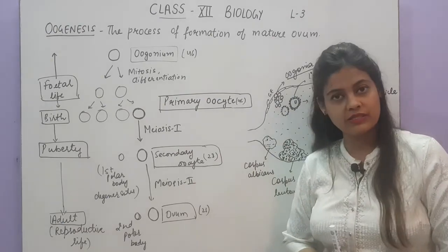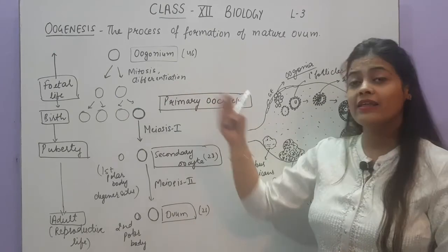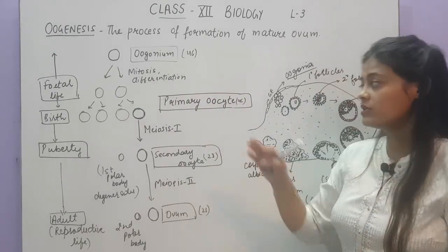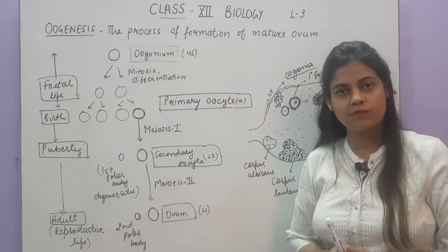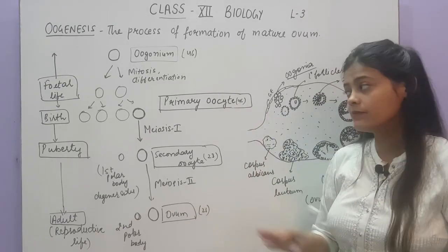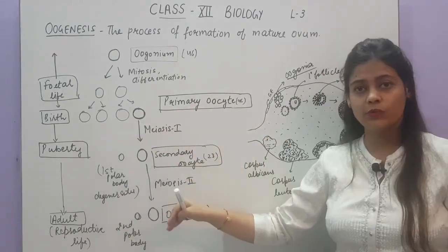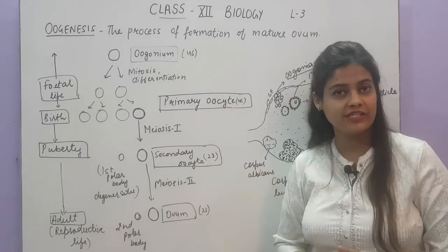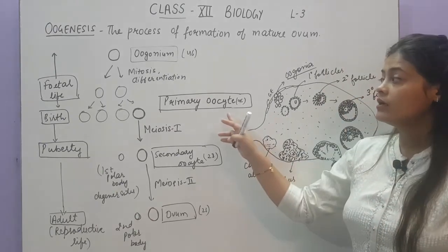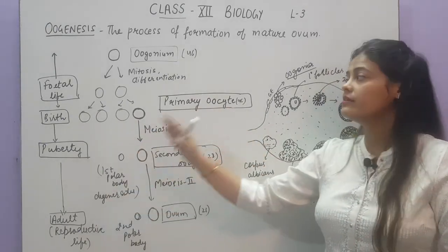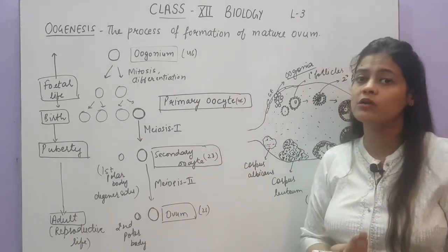To recap: oogonia have a fixed number established during female fetal development. They undergo mitosis and differentiation to form primary oocytes, so at the time of birth, the primary oocytes are fixed at 4 to 5 lakhs in each ovary. From birth till puberty, many primary oocytes undergo degeneration, leaving 60,000 to 80,000. When puberty is attained, the primary oocytes undergo further processing to form the mature ovum.